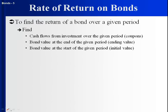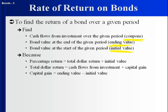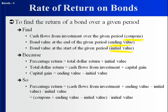To find the rate of return, you really only need three things: the cash flow from the investment (coupons), the bond value at the end of the period (ending value), and the bond value at the beginning of the period (initial value). You get the capital gain from ending minus initial value, then scale by the initial value to get the percentage return. So it's cash flow plus capital gain, all divided by the initial value.